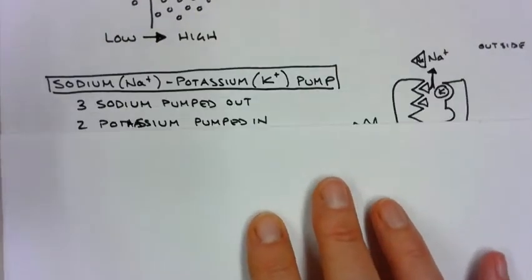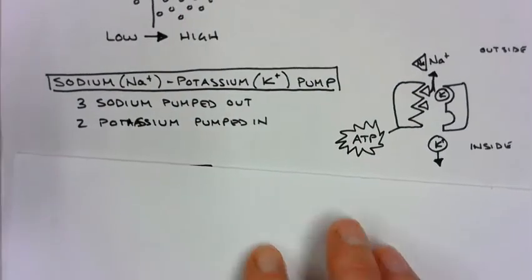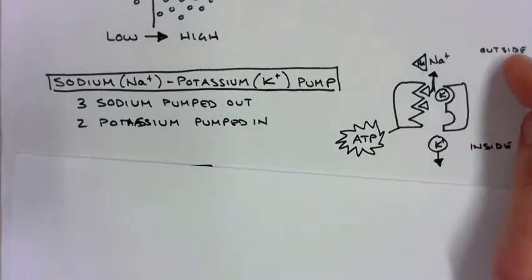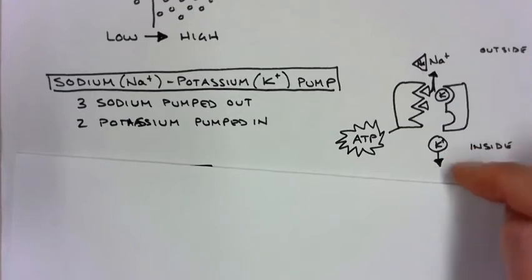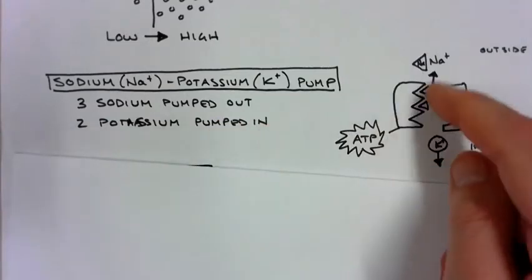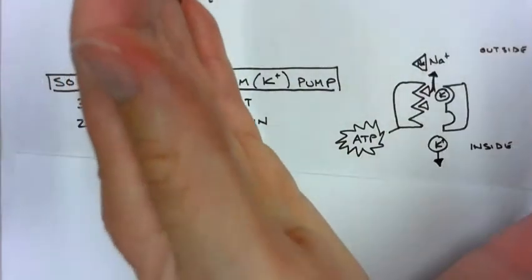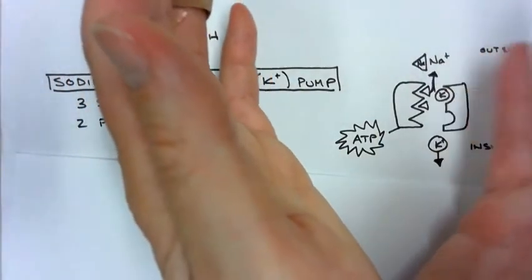There's one called the sodium potassium pump. The sodium potassium pump, you can see outside of the cell, we have sodium. Sodium is salt. And inside the cell, we have potassium. And so what we're doing is we're pumping sodium outside of the cell, three molecules at a time. So this opens and releases three sodium.